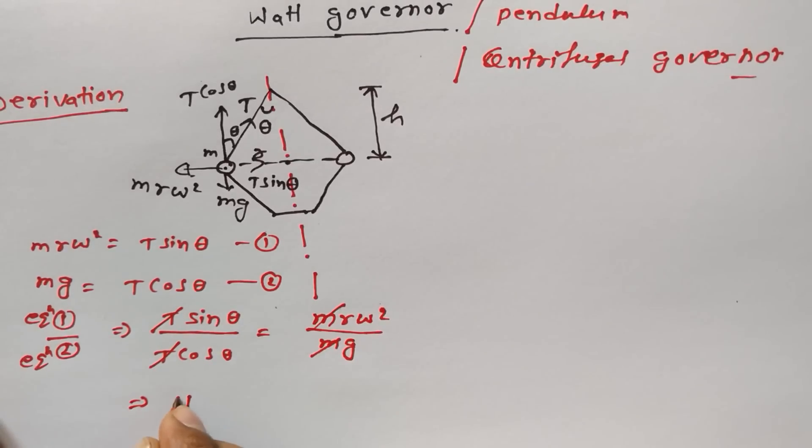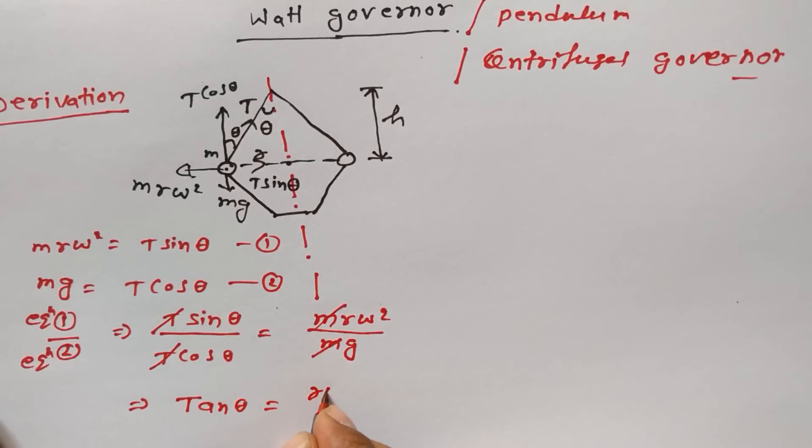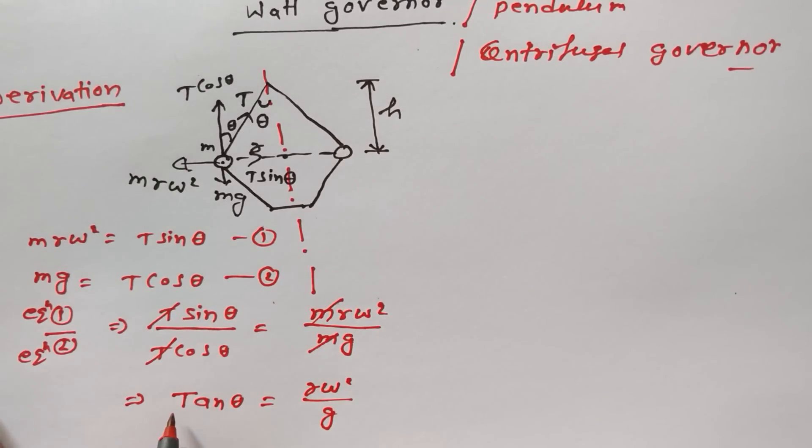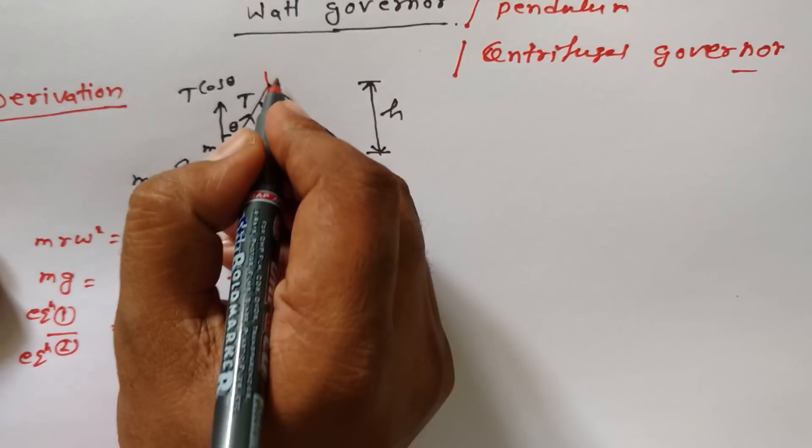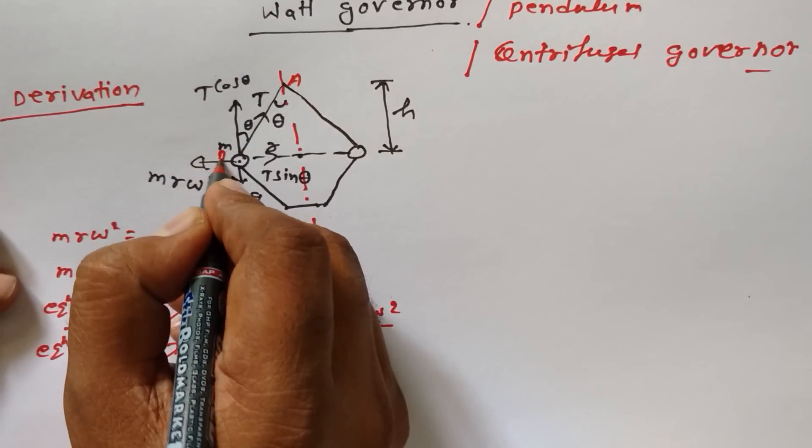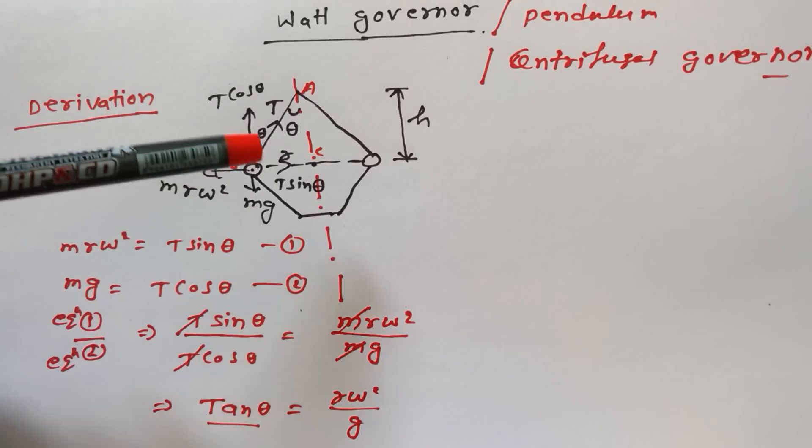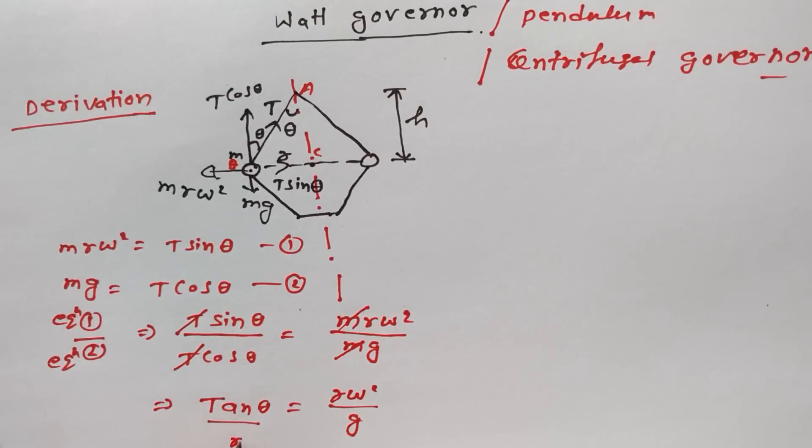We get tan(θ) - sin(θ) by cos(θ) - equals r*ω²/g. Now look at this diagram. If I give names A, B, and C, from this right angle triangle we can say tan(θ) equals r by h.